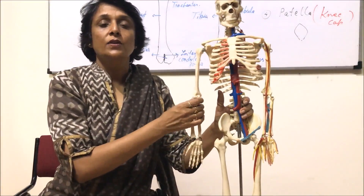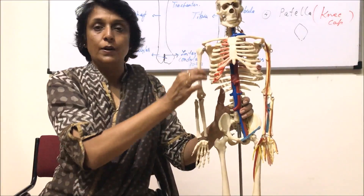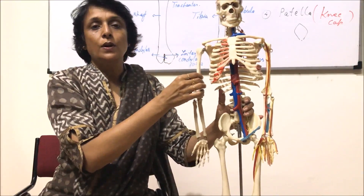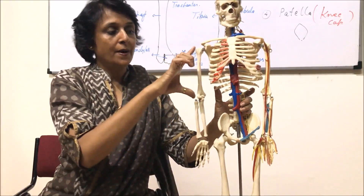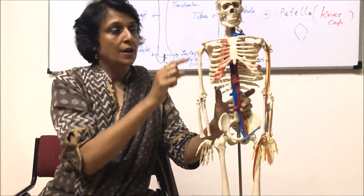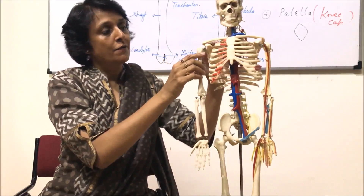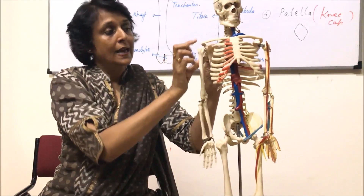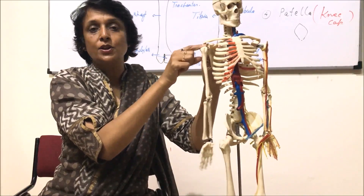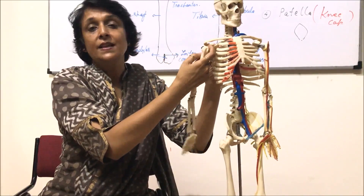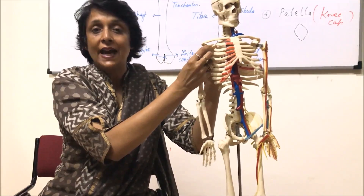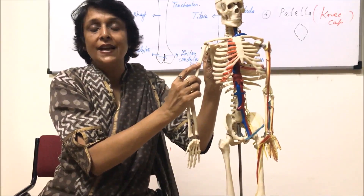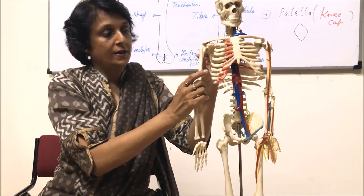We will now discuss the bones of the forelimbs and hind limbs using this model. In the forelimb, we have talked of the upper arm bone — this is the humerus. The head of the humerus fits into this depression here, which is the pectoral girdle. This cavity or depression is the glenoid cavity, so the head of the humerus fits into this cavity and makes a ball and socket joint.